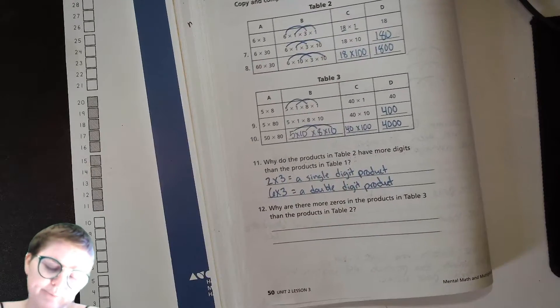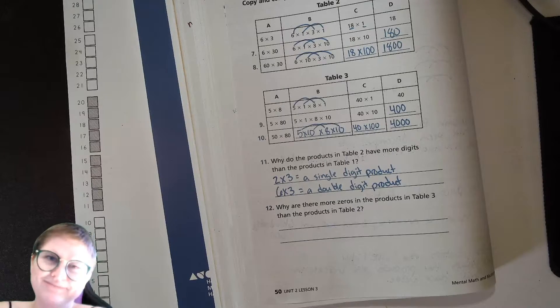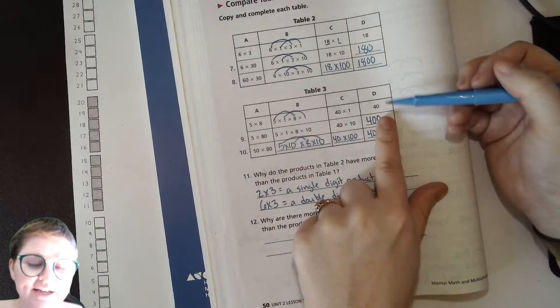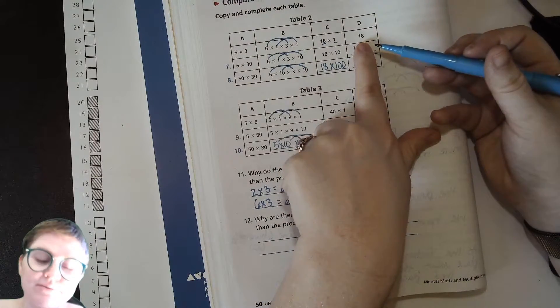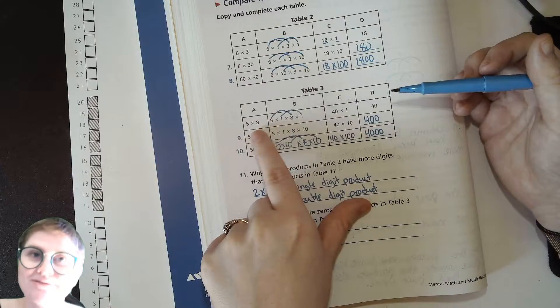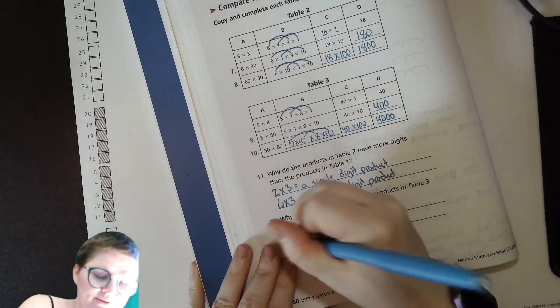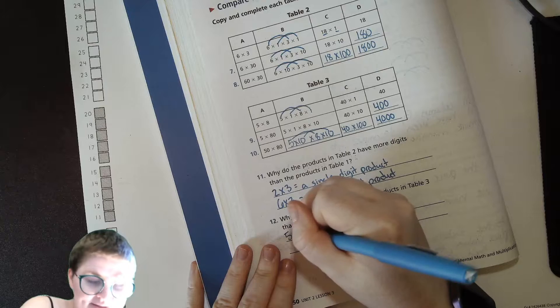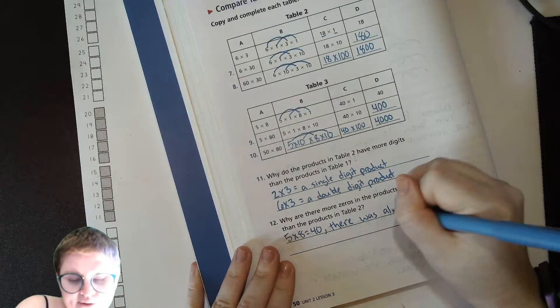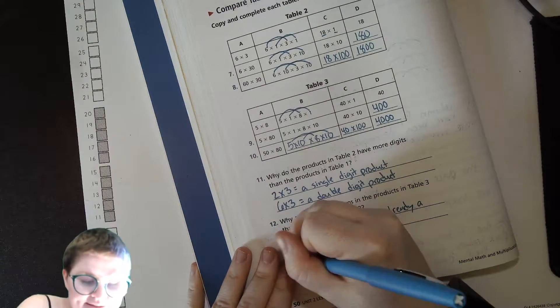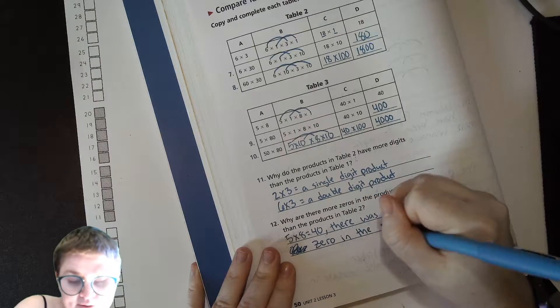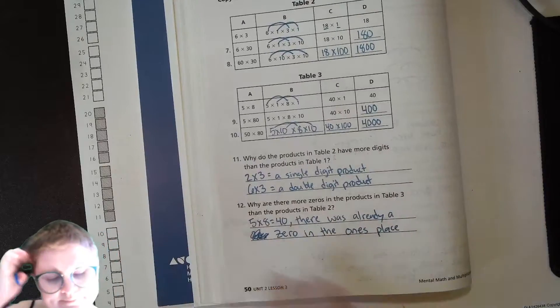Last question, why are there more zeros in the products in table three than the products in table two? So look over here. Our original product, when we just are working with single digits, it has a zero already. This one didn't have a zero. What do you think? If the original product from a single digit multiplication from single digit factors has a zero in it, there will be more zeros. So we'll say five times eight equals 40. There was already a zero in the one's place.